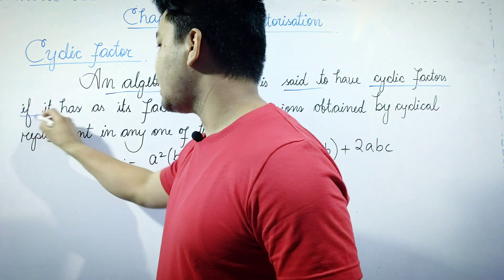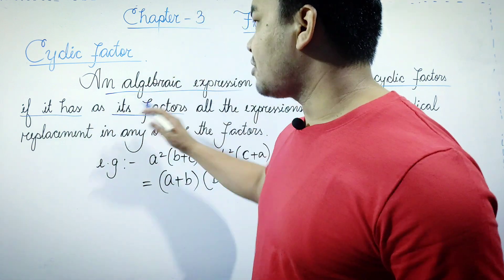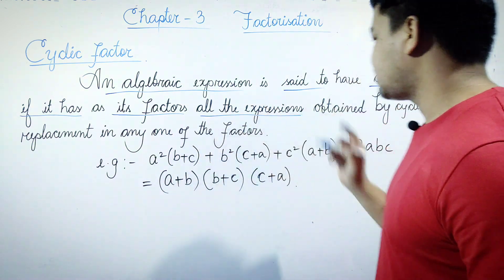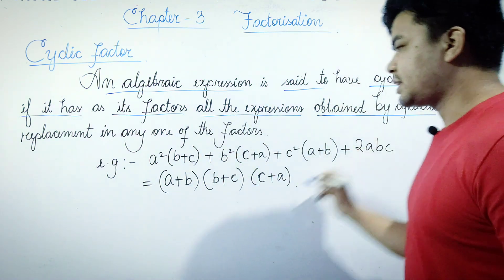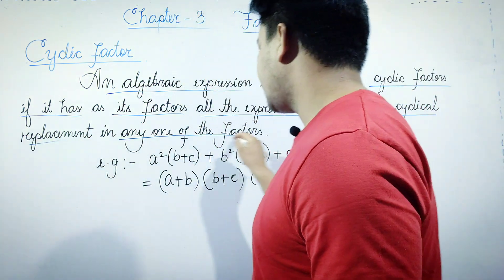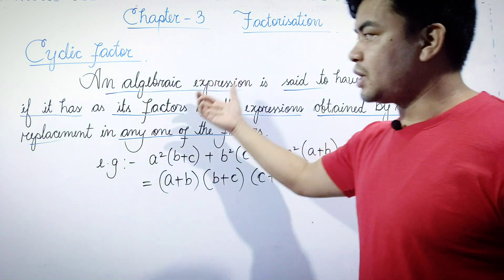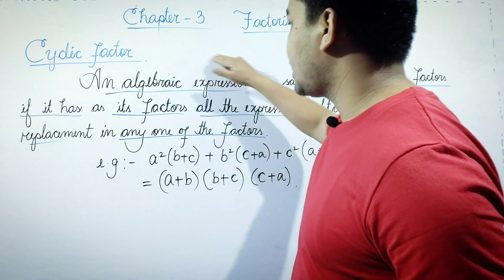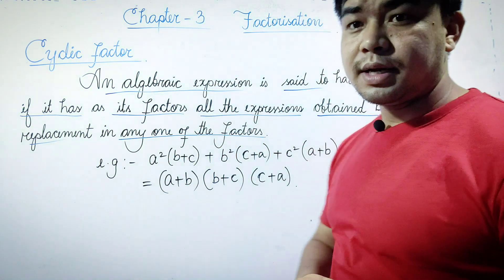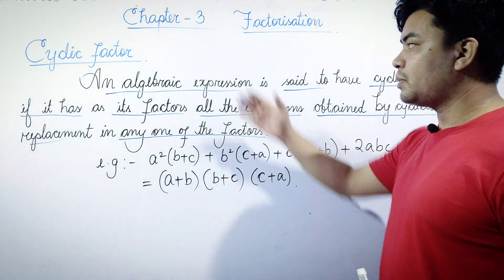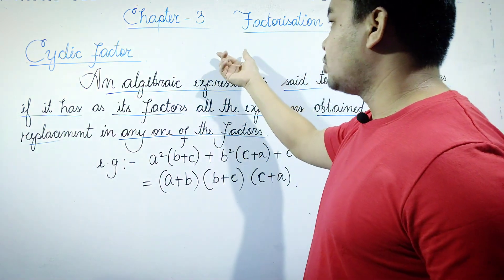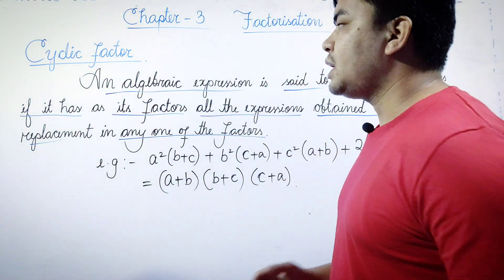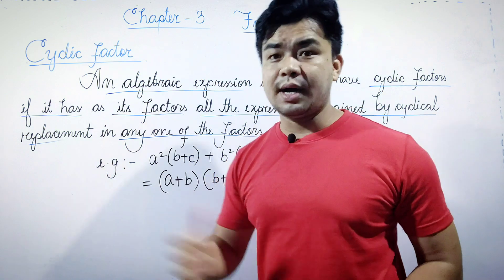If it has its factor, all the expressions are obtained by cyclical replacement in any one of the factors. We can see the factors of the first factor. Factors can be identified this way.